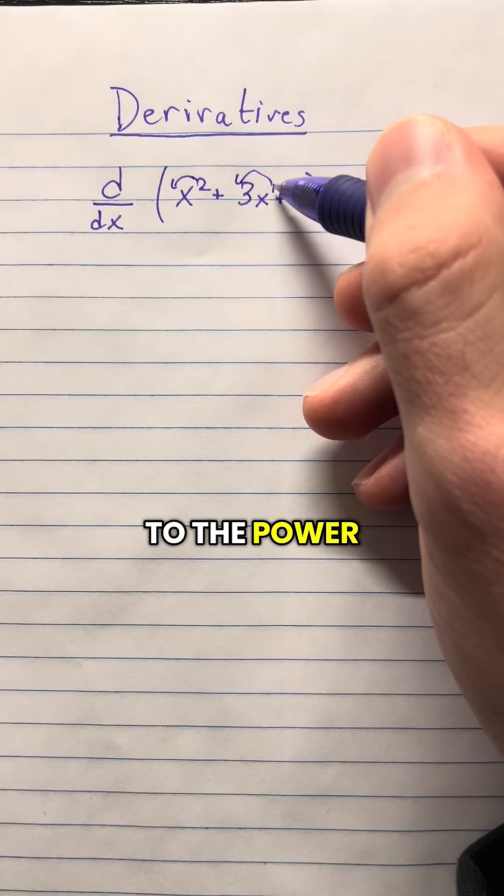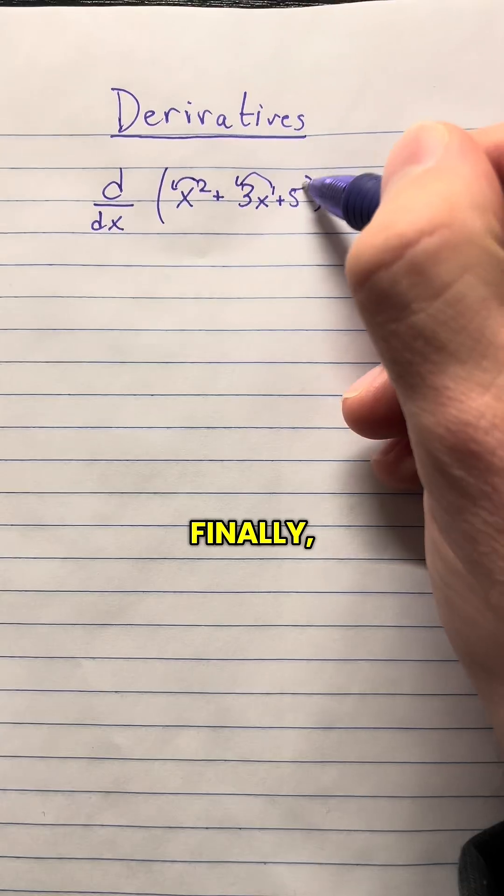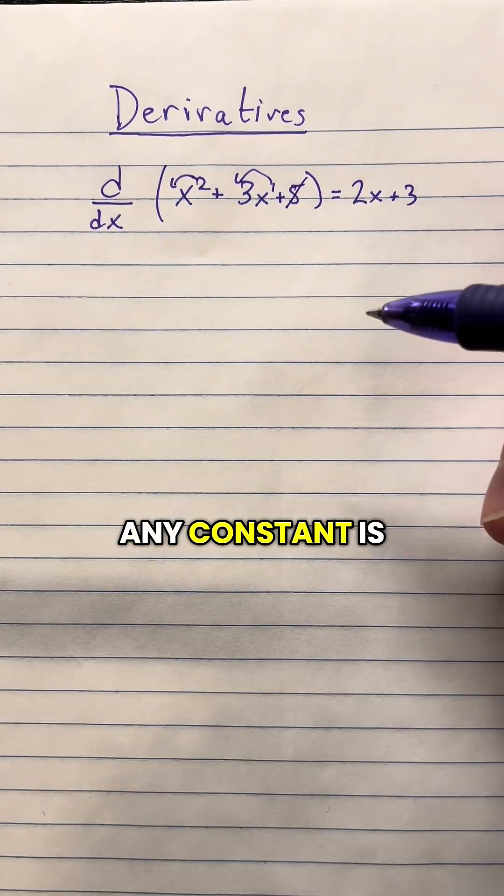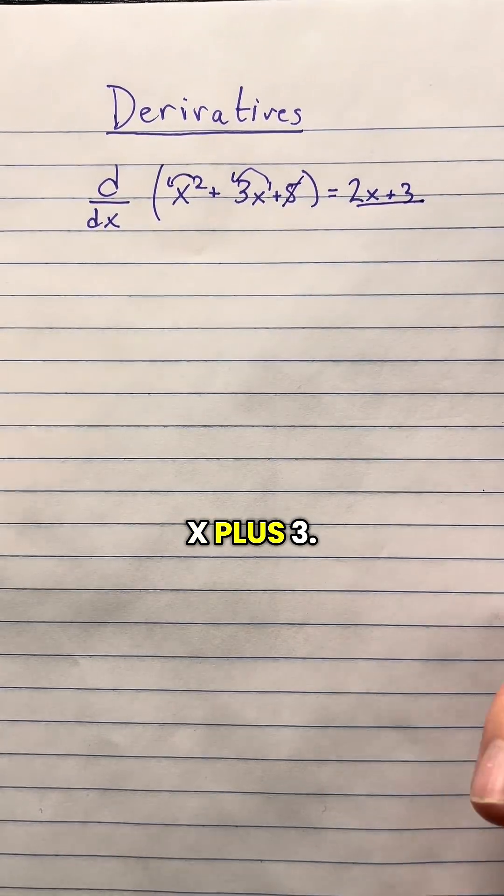And then the exponent of x to the power of 0, that's just 1. So multiply it out, we just got 3. And then finally, the derivative of any constant is 0. Therefore, the derivative here is 2x plus 3.